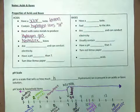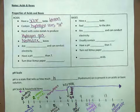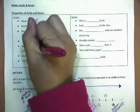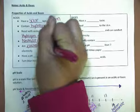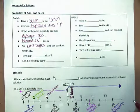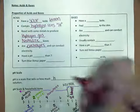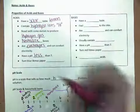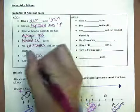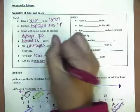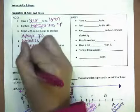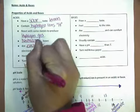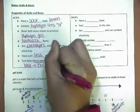They counteract them. They are electrolytes, which means they can conduct electricity. They have a pH less than 7. An indicator is litmus paper. They turn blue litmus paper red. So blue to red acid.